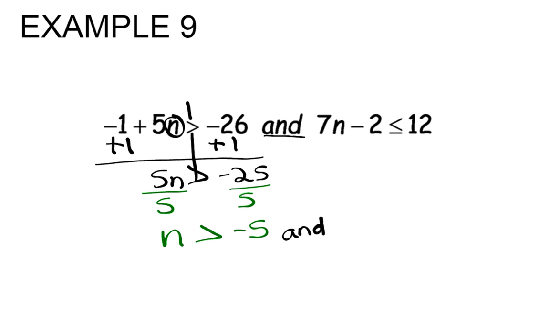On this one, I'm going to be adding the constant 2 to both sides of the inequality. That's going to give me 7n is less than or equal to 14, and then we divide both sides by positive 7, so I get n is less than or equal to positive 2.